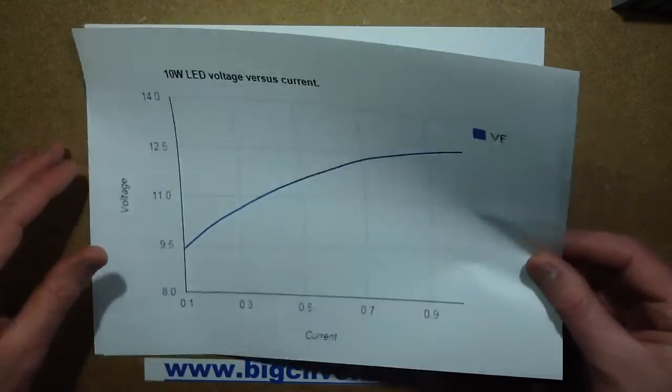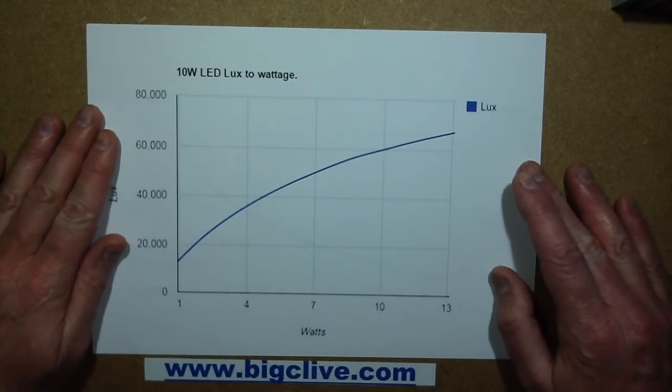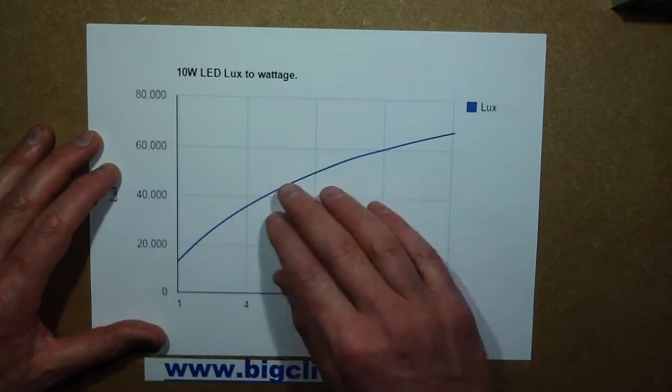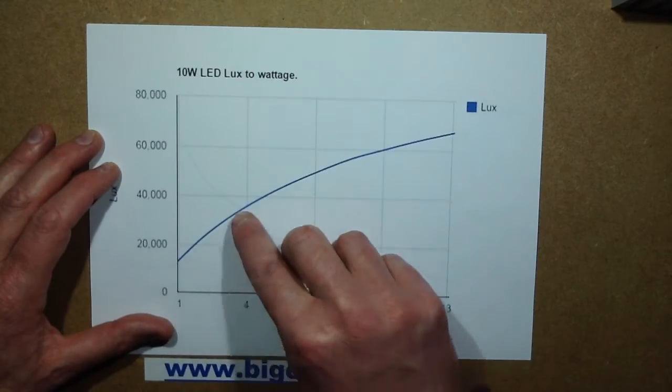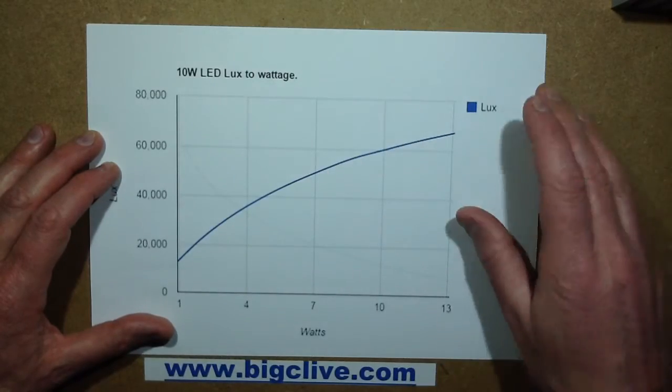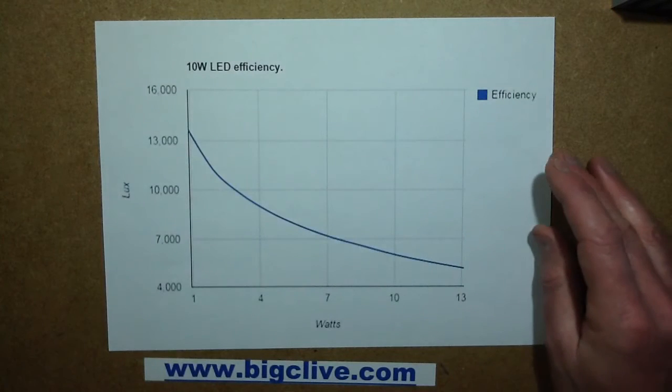That's the LED voltage versus current. This is the LUX output, the light output versus wattage. It rises as you'd expect, but it actually falls away as it rises—it's not a nice linear straight line as you might want. When you actually see how it actually fell in the LUX, the efficiency...